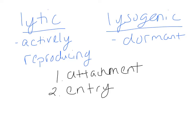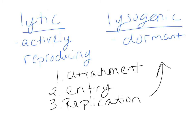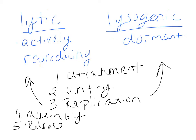Then there is replication of the genetic material. During the lysogenic cycle, every time the host cell reproduces, the viral DNA or RNA is replicated but no capsids are made. During the lytic cycle, you replicate the genetic material and make capsids. Then there is assembly of the capsid and genetic material into a mature virus, and finally release - both of which only happen in the lytic cycle.